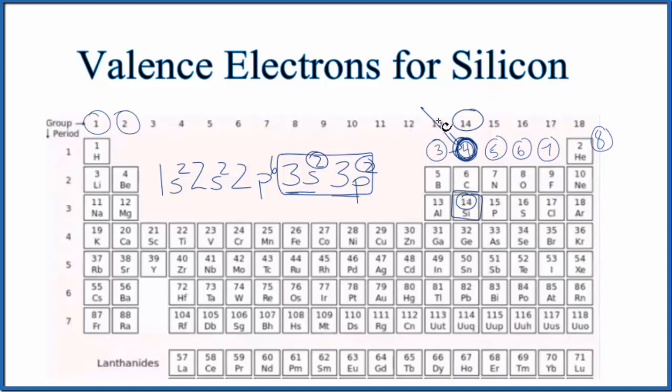So that's how you find the number of valence electrons for silicon. It has four valence electrons. This is Dr. B, and thanks for watching.